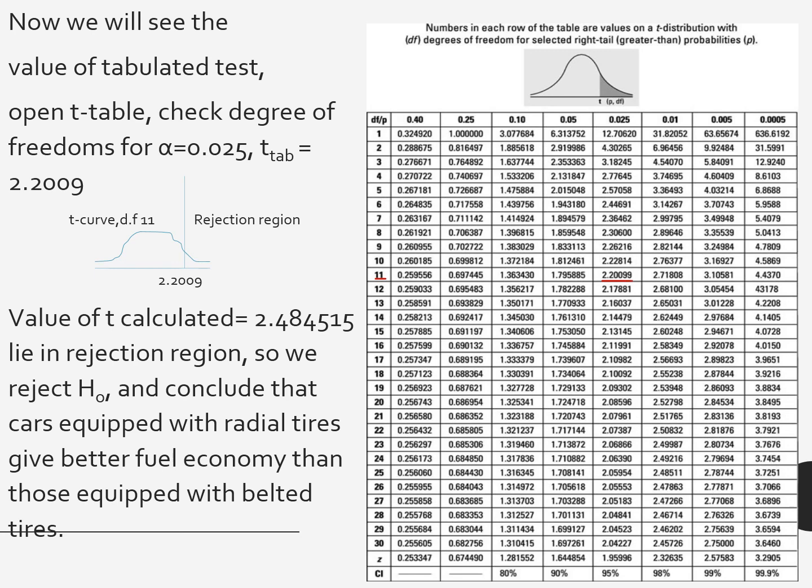Now our value of the calculated t test is 2.48. We will compare 2.2009. 2.48 is greater than 2.2009, so our value lies in the rejection region here. It means we will conclude that the cars equipped with radial tires give better fuel economy than those equipped with belted tires.